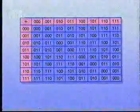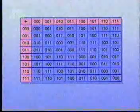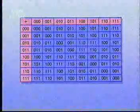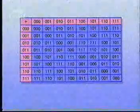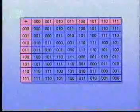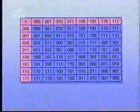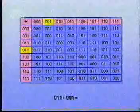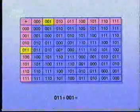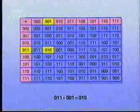The codes employed on CDs work in a similar way, but they involve binary numbers. For instance, here's how you add 3-bit numbers. In this example, 011 plus 001 equals 010.